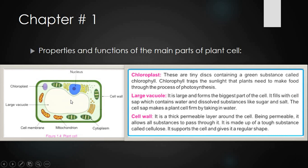The cell wall is a thick permeable layer around the cell. Unlike the partially permeable cell membrane in animal cells, this is a fully permeable layer — meaning all substances from outside can pass through it. It is made up of a tough substance called cellulose. It supports the cell and gives it a regular shape. Because the cell wall is thick, the plant cell maintains a regular shape, whereas the animal cell membrane is very thin, so the animal cell's shape can change.